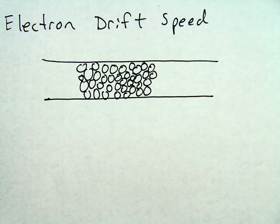So we're going to pick up with a slightly different idea, something called electron drift speed.